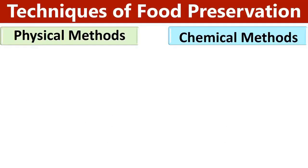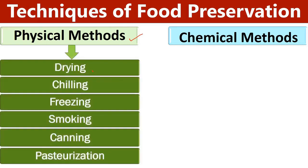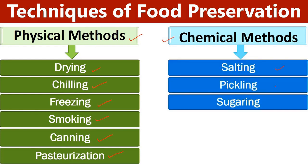Physical methods of food preservation include techniques like drying, chilling, freezing, smoking, canning, and pasteurization. Chemical methods of food preservation include techniques like salting, pickling, and sugaring.